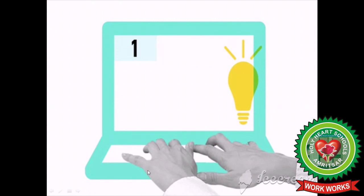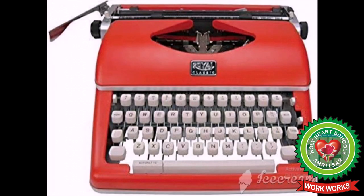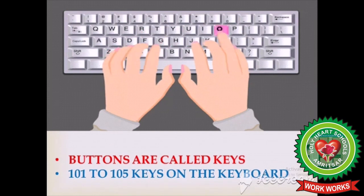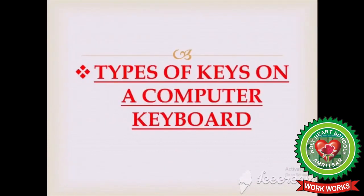So we can say that a keyboard is an input device that is used to type text — here text means numbers, alphabets, whatever you type on the monitor. Look at this machine — this is a typewriter machine. Earlier it was used for typing. So we can say the keyboard looks similar to a typewriter. The keyboard has many buttons, and these small buttons are called keys. There are about 101 to 105 keys on the keyboard.